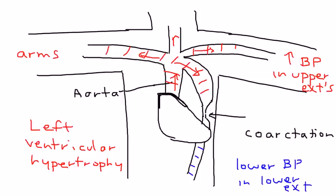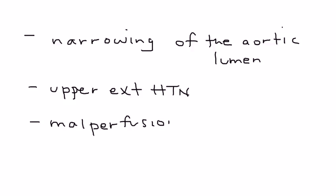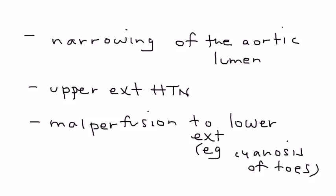Let's go back into some of the very basics in terms of defining this. It's a narrowing of the aortic lumen as I had previously drawn, and it results in upper extremity hypertension.